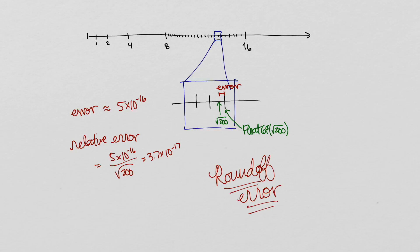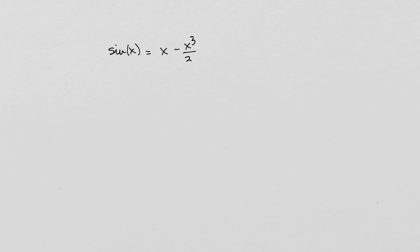Rounding to the nearest representable number is just one type of error, called round-off error. Inaccuracies can also arise from algorithms which approximate the functions we intend to compute. This is called truncation error.